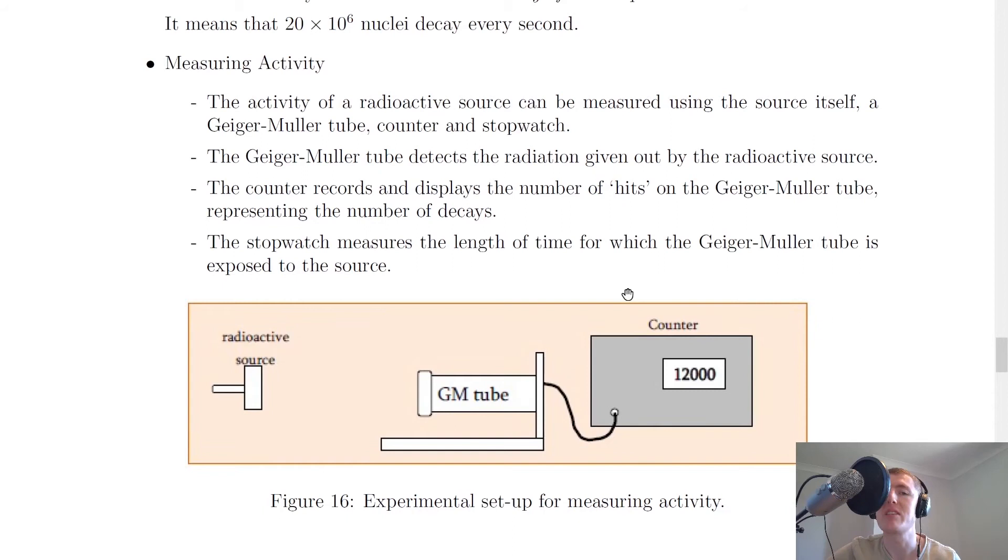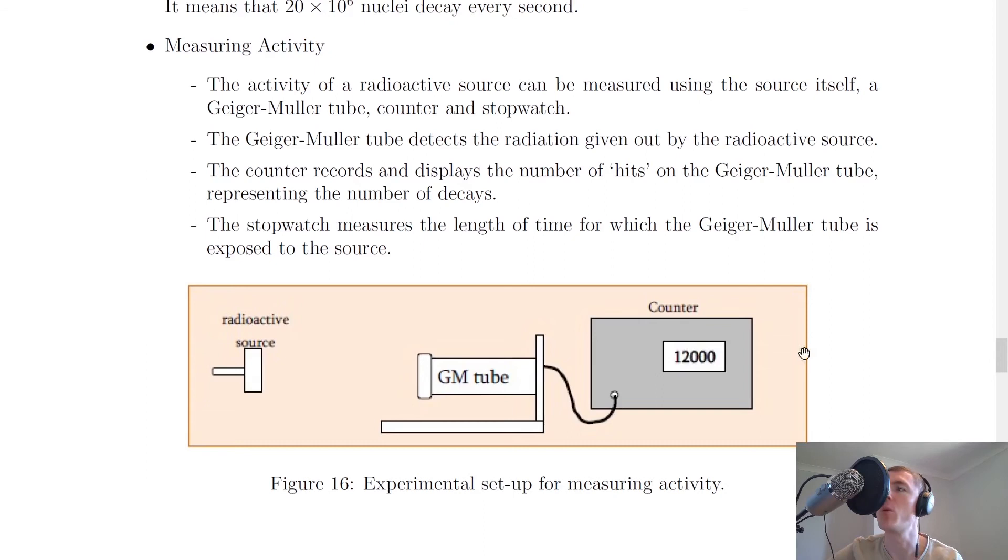Lastly, we're going to look at how you can measure the activity of a radioactive source. The way you do this is you take a Geiger-Muller tube connected to a counter, a bit like what we did for background radiation. You would also make sure you had a radioactive source present, otherwise there'd be no way to determine the activity.